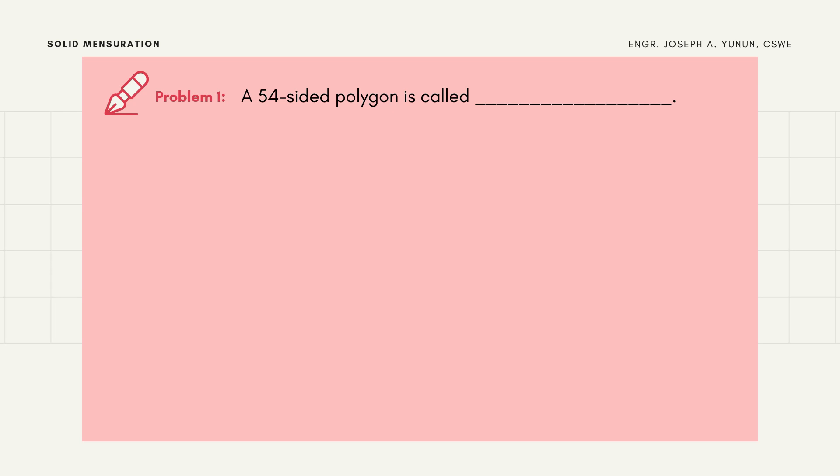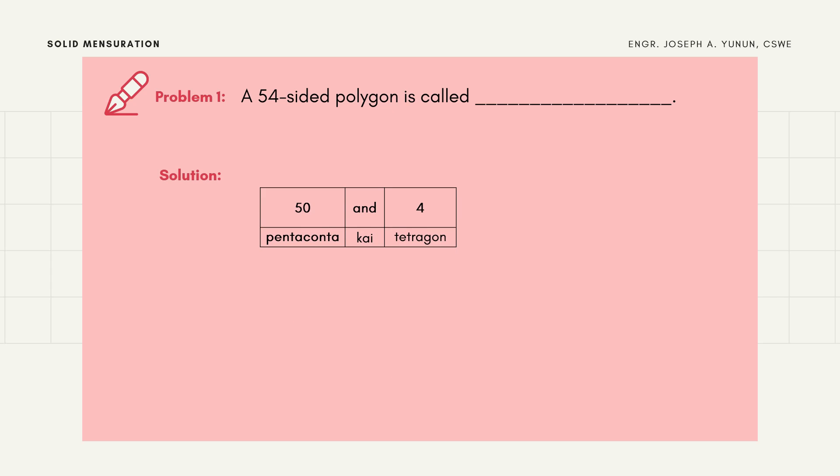Problem 1: A 54-sided polygon is called blank. The tens digit is 50 and the ones digit is 4. So 50 is 'pentaconta', the word 'and' is 'kai', and 4 is 'tetragon'. The final answer is pentacontakaitetragon.